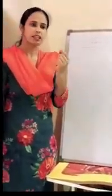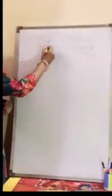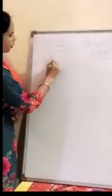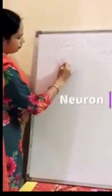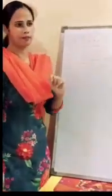Just as our body is made up of cells — the basic smallest unit — cells come together to make tissues, and then form the organism. Similarly, the brain is made up of one structural and functional unit which is called the neuron. The neuron is the basic structural and functional unit of the brain.